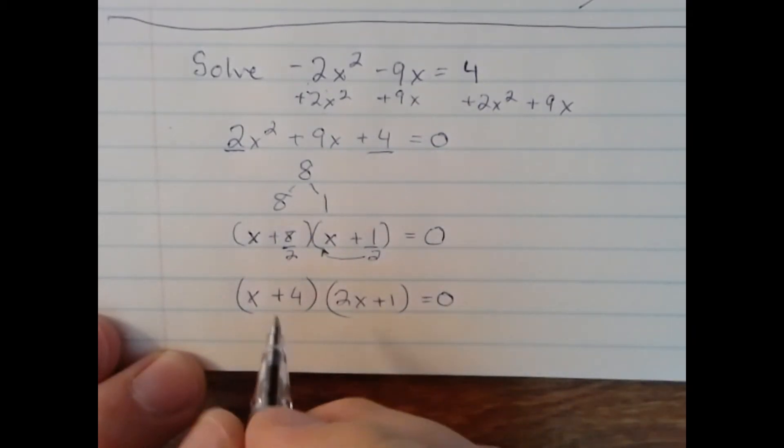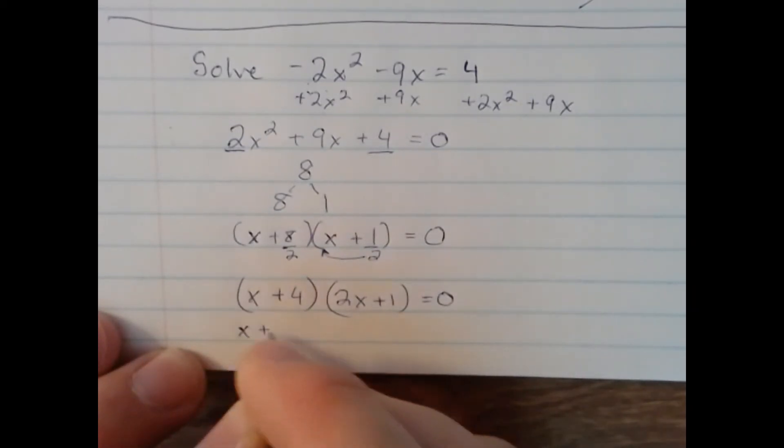This first term is fairly easy. x+4, I'm setting that equal to 0 to solve. x = -4. One of my two answers.